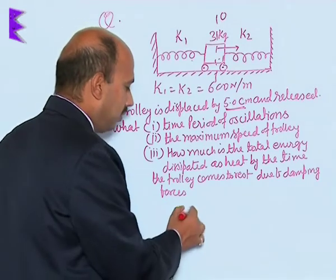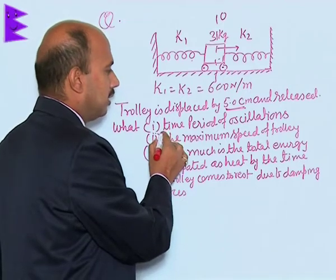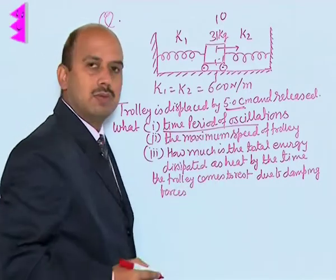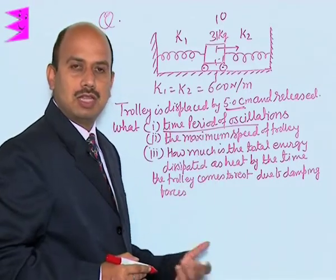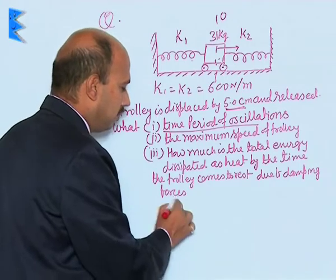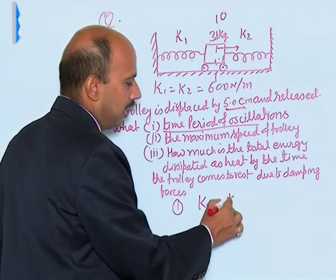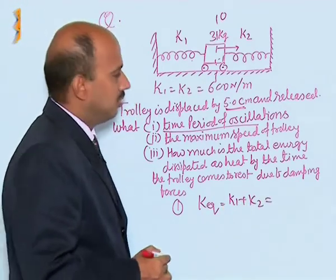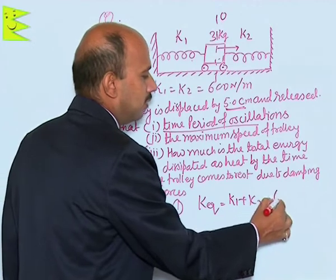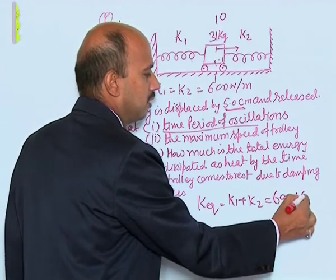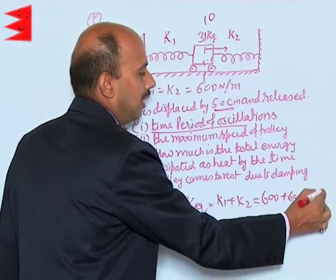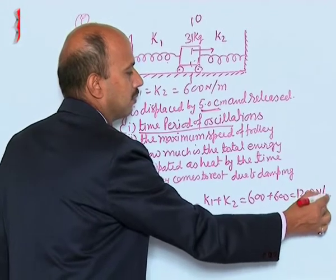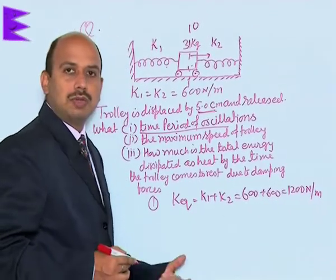First part, I am taking here the time period of oscillation. We have to calculate time period of oscillation. We can take here k equivalent is equal to k1 plus k2, because that is a parallel combination. We can write here 600 plus 600 is equal to 1200 Newton per meter. This is the total spring constant.